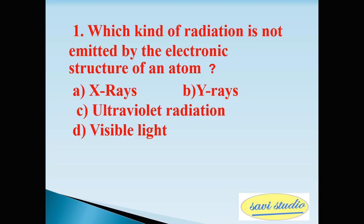First question: which kind of radiation is not emitted by the electronic structure of an atom? The options are A: X-rays, B: Y-rays, C: ultraviolet radiation, D: visible light. The correct answer is B: Y-rays.